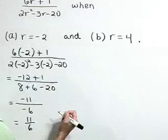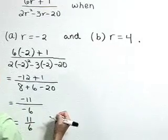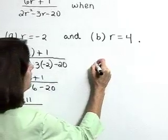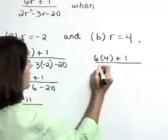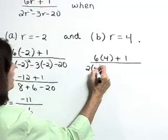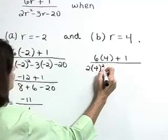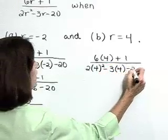Now for part b, let's evaluate this rational expression if r is equal to 4. So in the numerator, we have 6 times 4 plus 1. The denominator is 2 times 4 squared minus 3 times 4 minus 20.